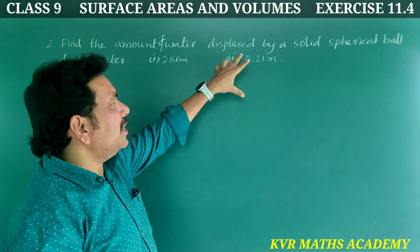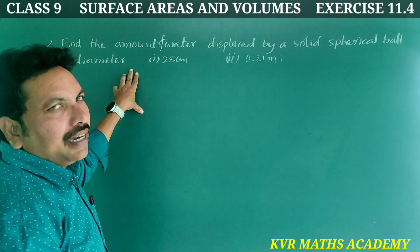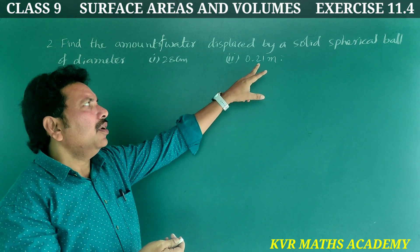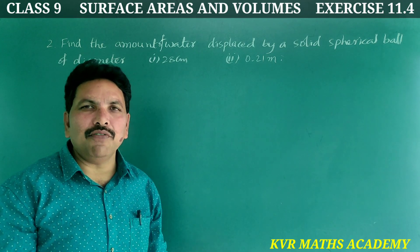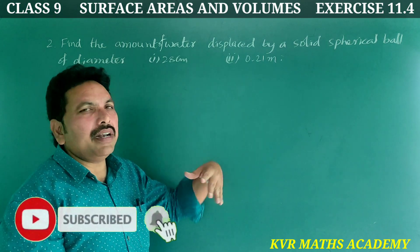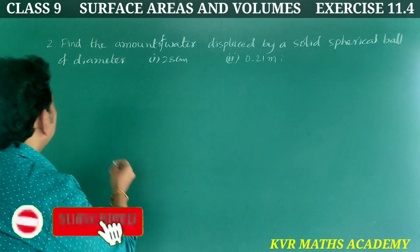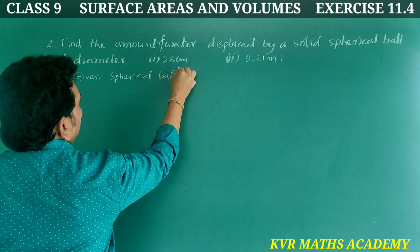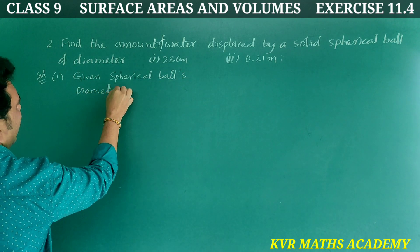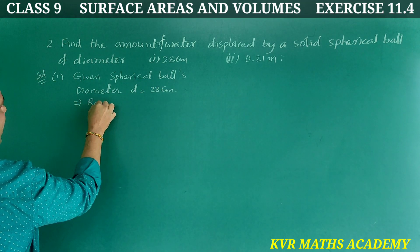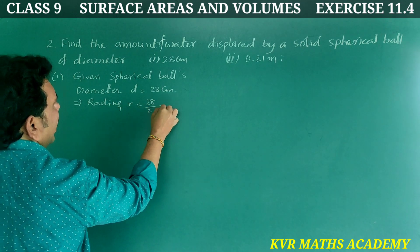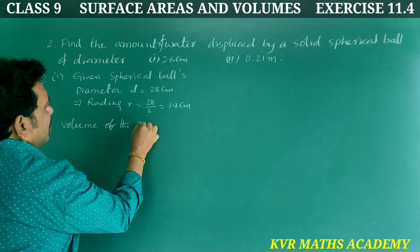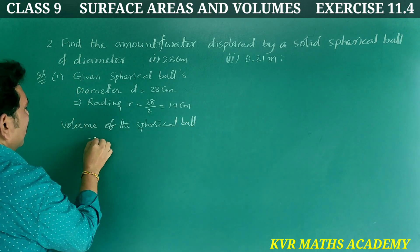To find the amount of water displaced by a solid spherical ball, we need to find the volume. Since diameter is given, we first find the radius. Solution for first part: given diameter d = 28 centimeters, therefore radius r = d/2 = 28/2 = 14 centimeters.